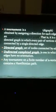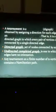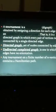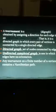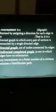A directed graph is a set of nodes connected by edges. An undirected complete graph is one in which edges have no orientation. Any tournament on a finite number of n vertices contains a Hamiltonian path.